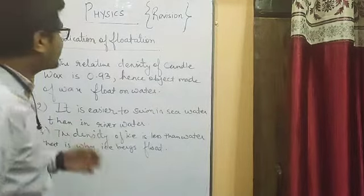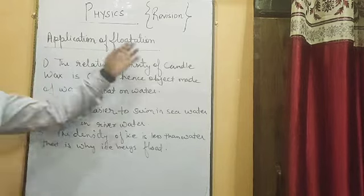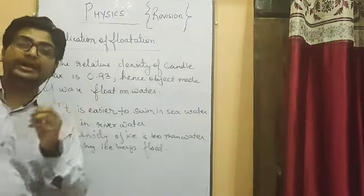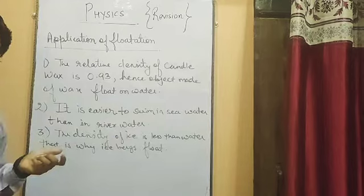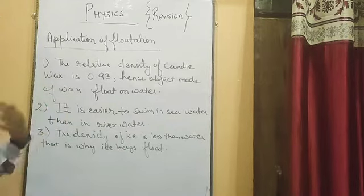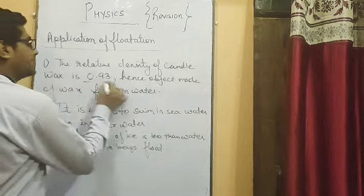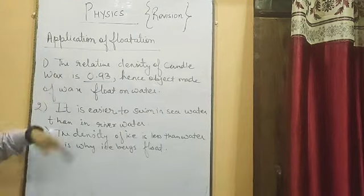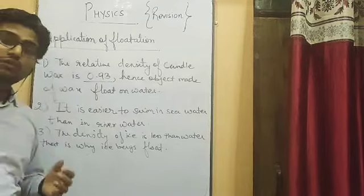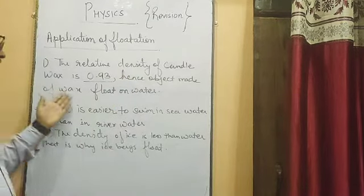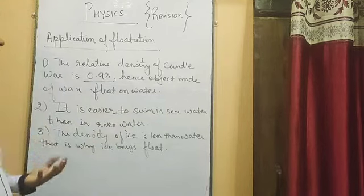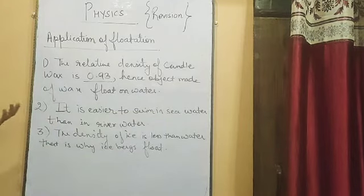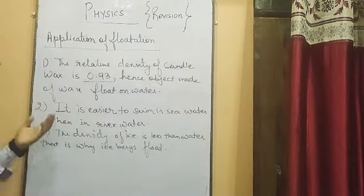Now let us talk about some applications based on flotation. The first one: the relative density of candle wax is 0.93. Since the density of water is 1, and the density of candle wax is less than 1, it will float over water. This is the reason why objects made of wax easily float on water.